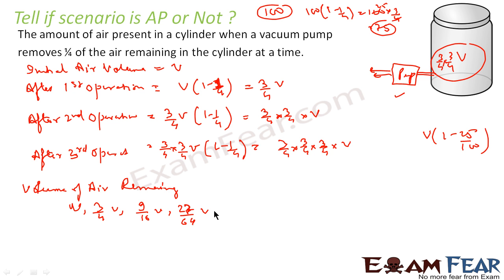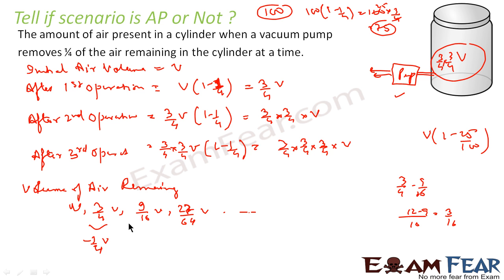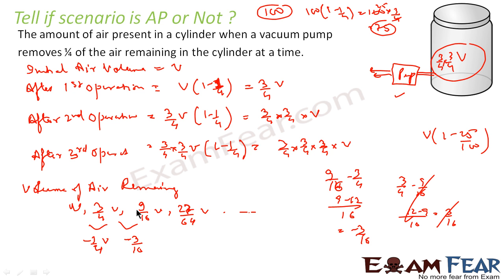Let's find the difference between terms. The difference between V and 3/4 V is −1/4 V. The difference between 3/4 and 9/16 is −3/16 V. The differences are not constant, so this is NOT an AP. It is a geometric progression.